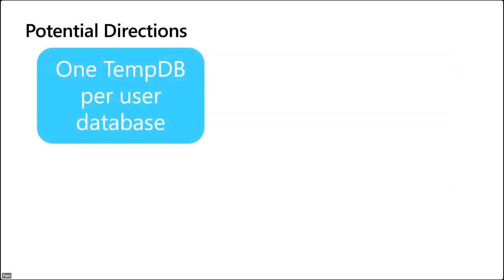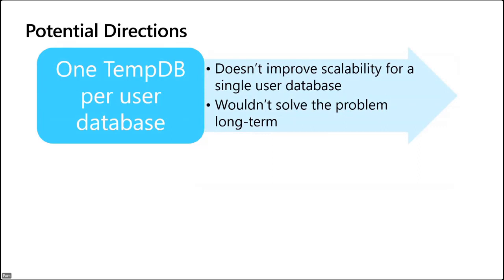One common request is: why not have one TempDB per user database? It doesn't actually improve scalability for a single user database. Most customers with this problem don't have lots of applications on the same instance with different databases — they have one massive application with major concurrency on a single database. Having one TempDB per user database wouldn't solve that. Another suggestion is to make TempDB fully in-memory OLTP, but in-memory OLTP today has different data structures, different performance patterns, and not all data types or surface area of regular user databases are supported.